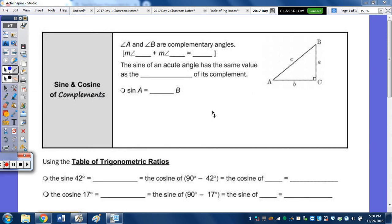Today, we're going to take a look at the sine and cosine of complements. In our diagram of triangle ABC, remember the capital letters represent the angles where the lowercase letters are the lengths of the sides. Our two complementary angles in this triangle are going to be A and B, which are also the acute angles.